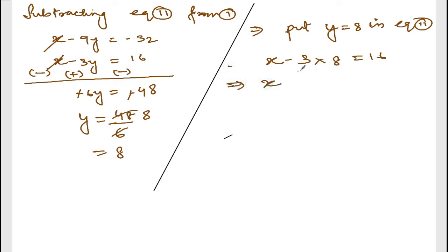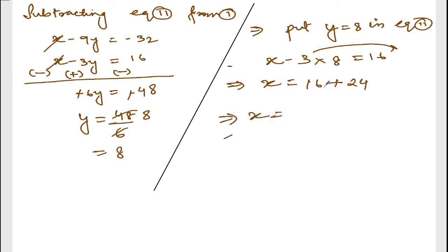Using substitution: X minus 24 equals 16. Transferring 24 to this side: X equals 16 plus 24. That is 40. So X is 40 and Y is — wait, let me correct: 6 plus 4 is 10, so Y is 10. X is 40, Y is 10.